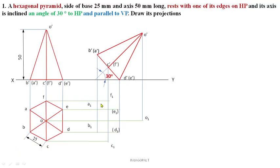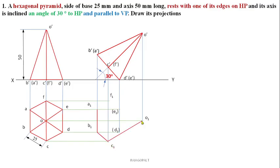Now, as we did in the prism, join all the boundaries of this top view by continuous thick lines. What are all the boundaries here? A1-B1, B1-C1, C1-O1, O1-F1, F1-A1 — these are the boundaries of this particular view and have to be joined by means of continuous thick lines.